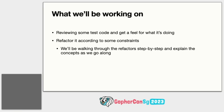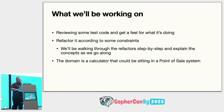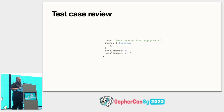To understand what we're doing, we're going to use the domain of a calculator. Imagine you're a point-of-sale system in a grocery store and you're trying to buy something — you just want to figure out how much you're supposed to pay. So let's start by reviewing our test cases.